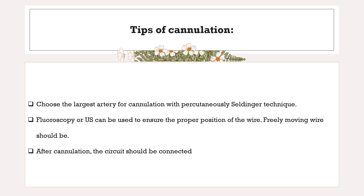For cannulation tips: there should be a dedicated team for cannulation and circuit preparation. We should choose the largest artery for cannulation using the percutaneous Seldinger technique. Fluoroscopy or ultrasound can be used to ensure proper wire position, and we should confirm that the wire is freely mobile. After cannulation, the circuit should be connected.